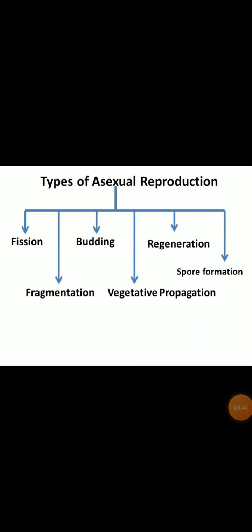So students, we have discussed all the types of asexual reproduction: fission, fragmentation, regeneration, budding, vegetative propagation, and spore formation. All the modes of reproduction we have discussed allow a new generation to be created from a single individual, which means only one parent is required to form new individuals. That is why this type of reproduction is known as asexual reproduction.